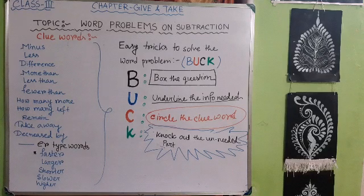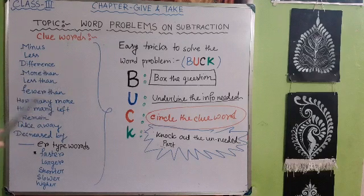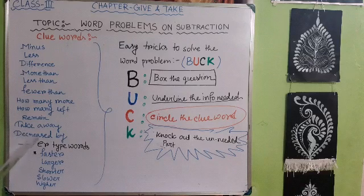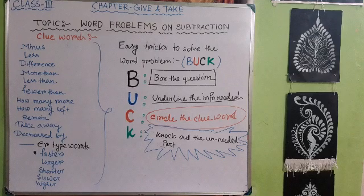So let us read the clue words I have written here. The first clue words are: minus, less, difference, more than, less than, fewer than, how many more, how many left, remain, take away, decrease by, and also comparative words ending in '-er'. For example: faster, larger, shorter, slower, higher. If you find this kind of word in a problem, then it will be a subtraction. Please remember these clue words.